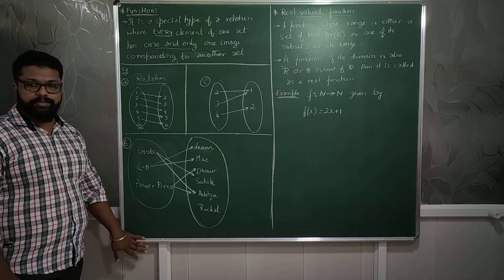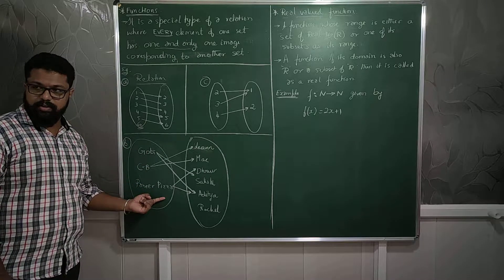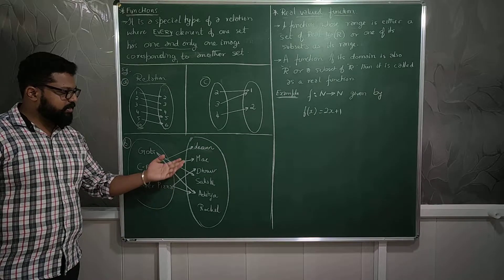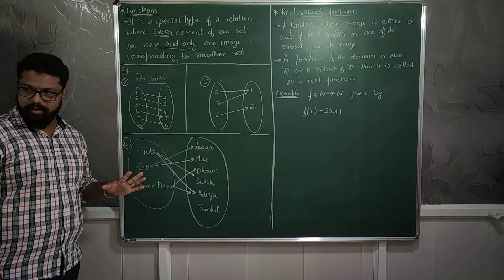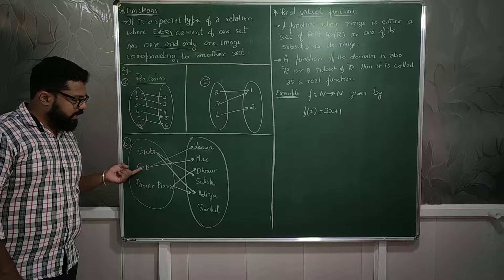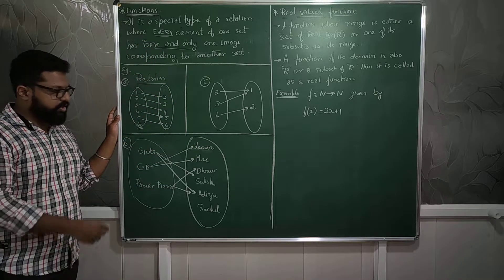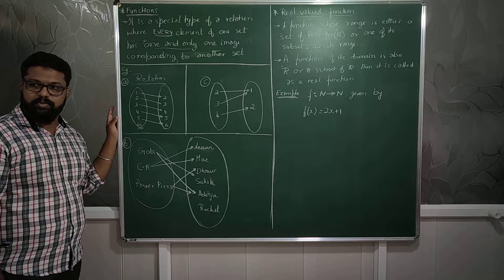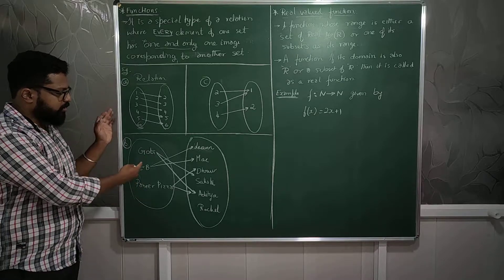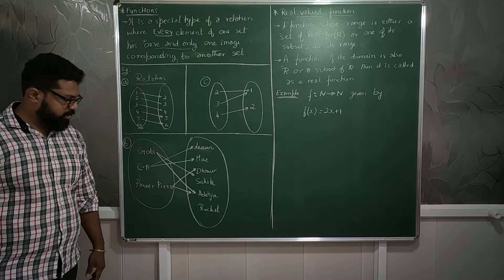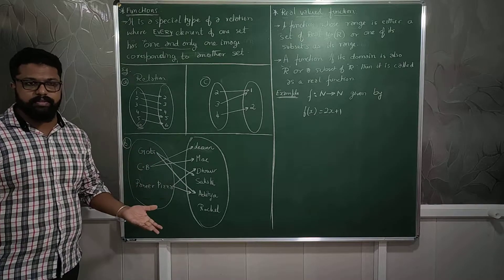Next, the second example which we studied in the relation topic. There is Gobi Manchurian, Chicken Biryani, and Paneer Pizza. Three dishes, and there are people in the list. Lian has opted for Chicken Biryani, Matt also wants Chicken Biryani. So Chicken Biryani is having two images. That condition is ruled out. It should have only one image. That means Chicken Biryani, only one plate is there. Lian wants it, Matt also wants it. We cannot share, no sharing. Understood?